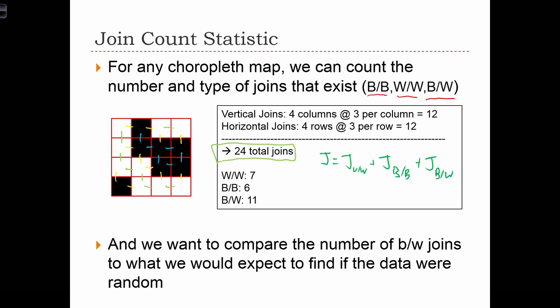So if we knew what these two quantities were and this quantity, we could have subtracted this from this to know right away what the black-white join count was without actually going through and finding those counts.